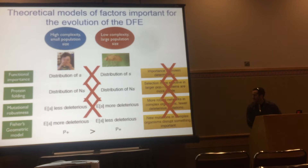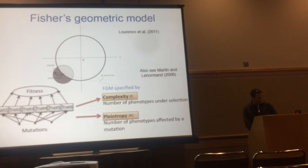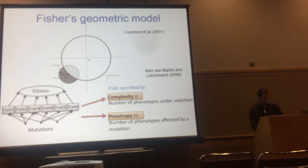That leads us to Fisher's geometric model — a conceptual model where there's an optimal fitness, the population exists somewhere in a phenotypic space, and mutations move the population around in that space. Key parameters include the complexity or number of phenotypes under selection, as well as the pleiotropy of different mutations — the number of phenotypes that a given mutation affects.